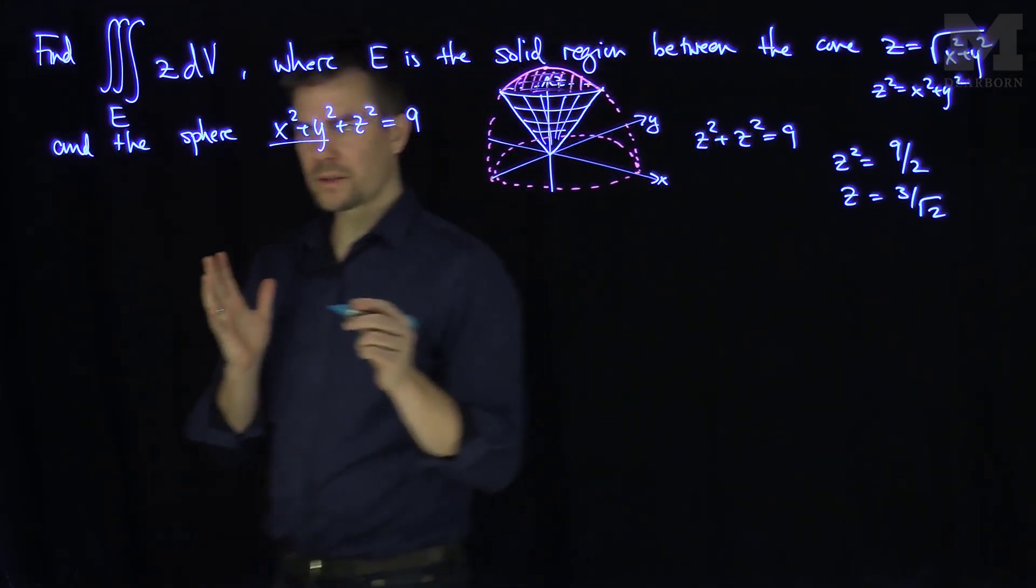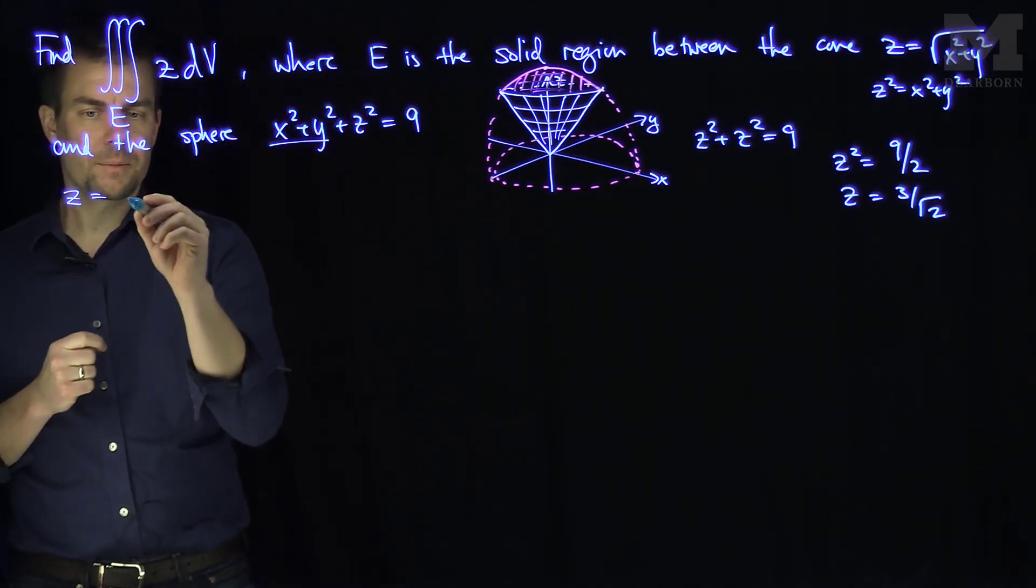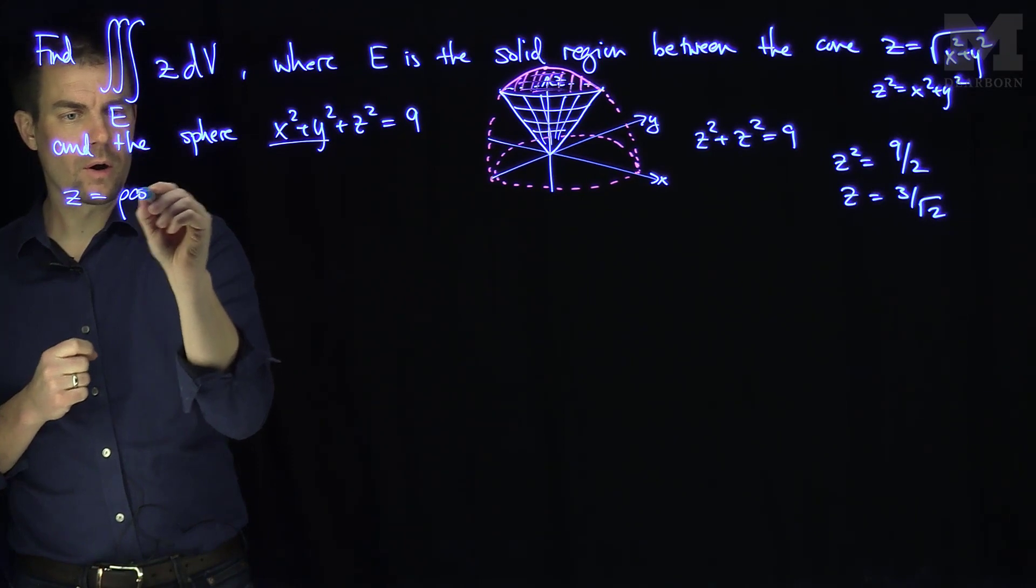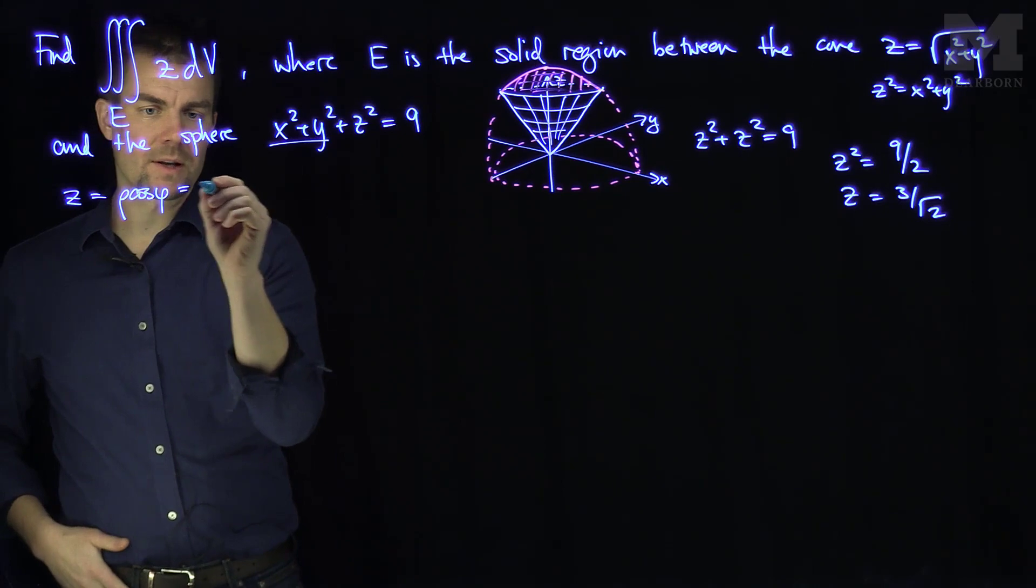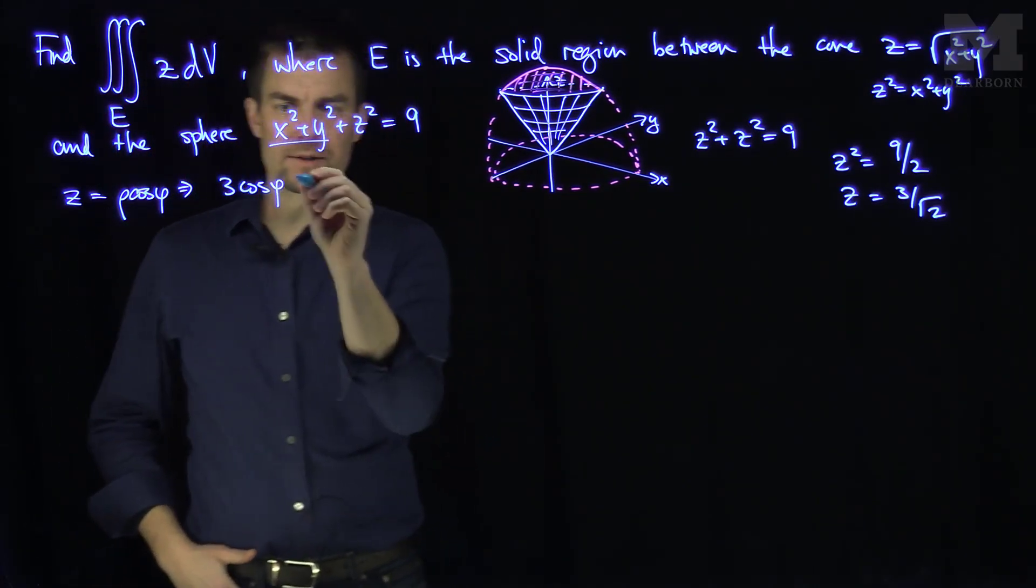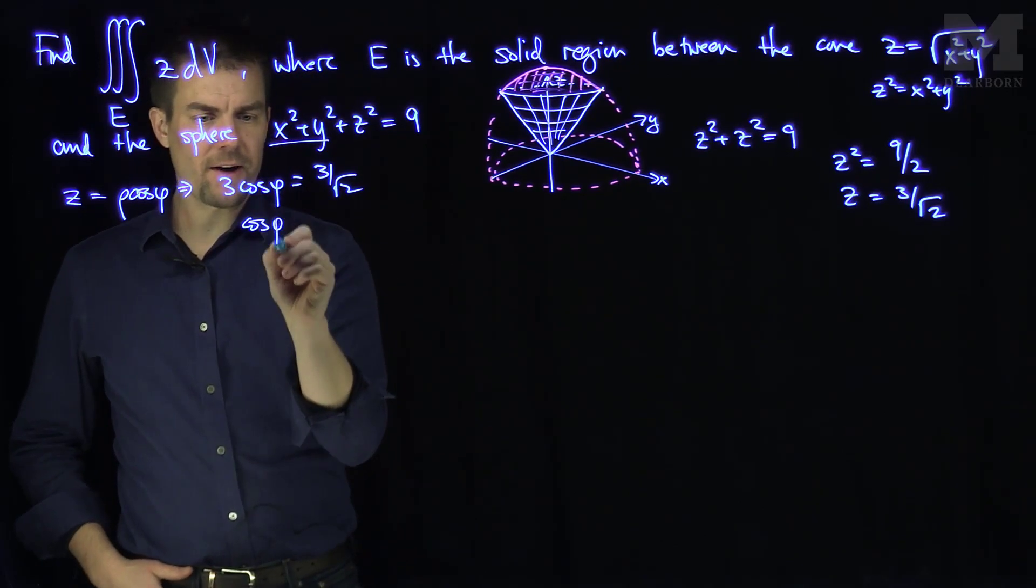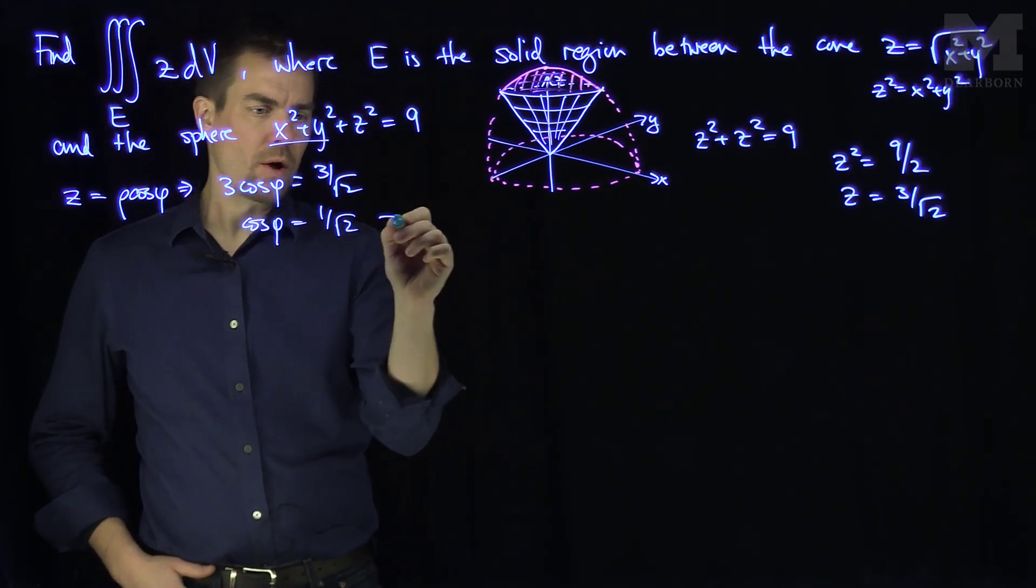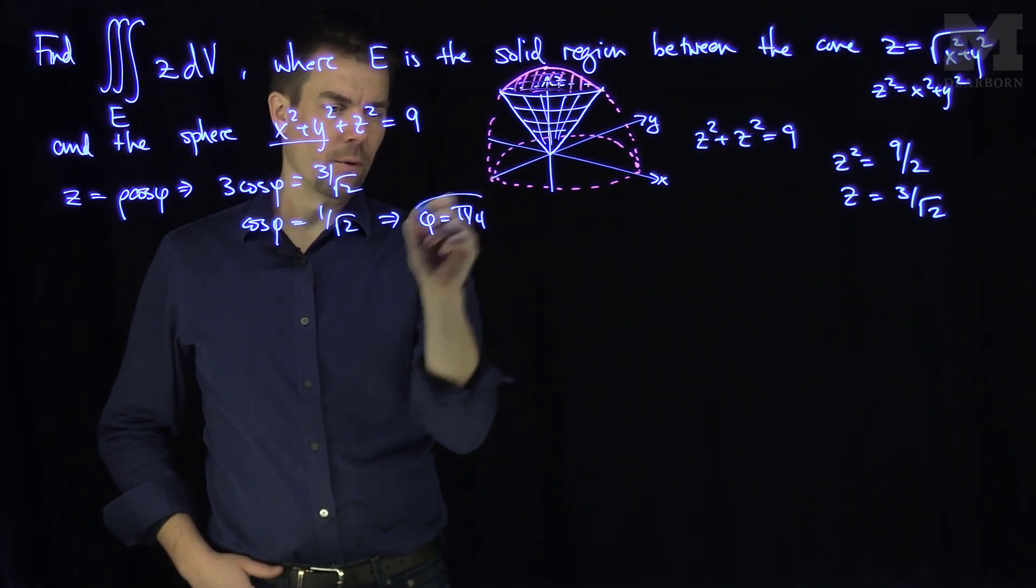Now, of course, what is Z in spherical coordinates? In spherical coordinates, Z is going to be equal to the radius rho cosine phi. But in this situation, the radius is equal to 3, so this tells me that 3 cosine of phi is equal to 3 over root 2, which tells me that the cosine of phi is 1 over root 2, and that tells me that phi is equal to pi over 4.